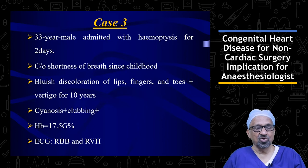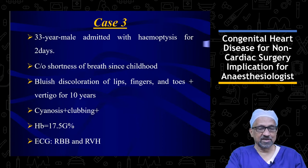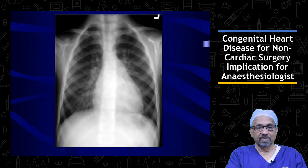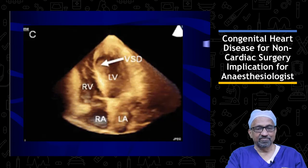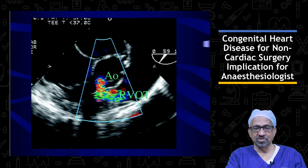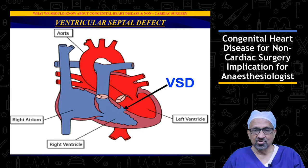The third case is a 33-year-old male admitted with hemoptysis for two days, with bluish discoloration of lips, fingers, and toes. Cyanosis and clubbing were present, hemoglobin was 17.5 g/dL. ECG showed right bundle branch block and right ventricular hypertrophy. The X-ray shows pulmonary oligemia, and this patient also had evidence of right-to-left shunting because of chronic elevation of the pulmonary artery pressures.